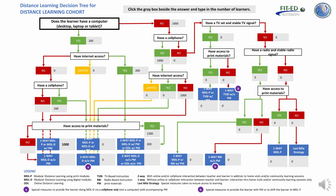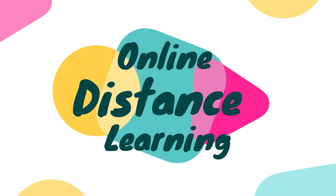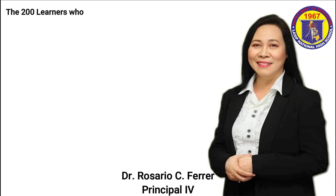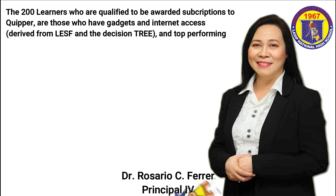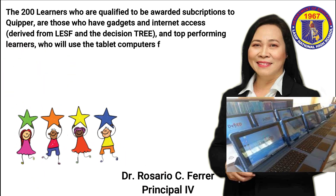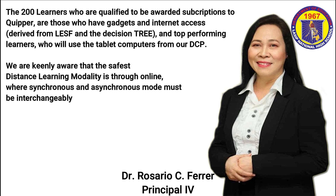This slide shows that of 1,200 enrolled learners, there are 200 learners who have access to internet and print material. These are the learners who will be under online distance learning with print material. One of the two distance learning modalities mapped out by the school is online distance learning. The 200 learners qualified for Creeper subscriptions are those who have gadgets and internet access, derived from our LESP and decision tree, and top-performing learners who will use tablet computers from RTCP. We're keenly aware that the safest distance learning modality is through online, where synchronous and asynchronous modes must be interchangeably available.